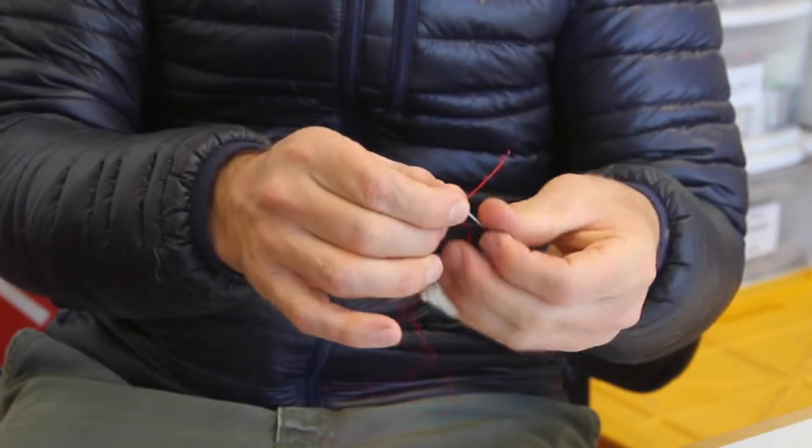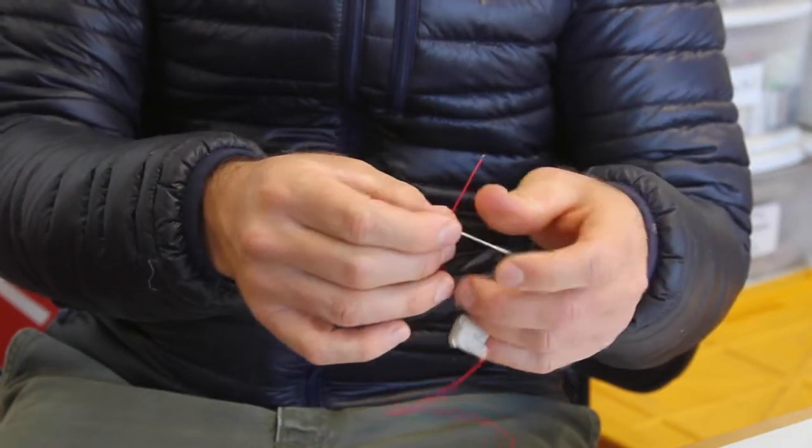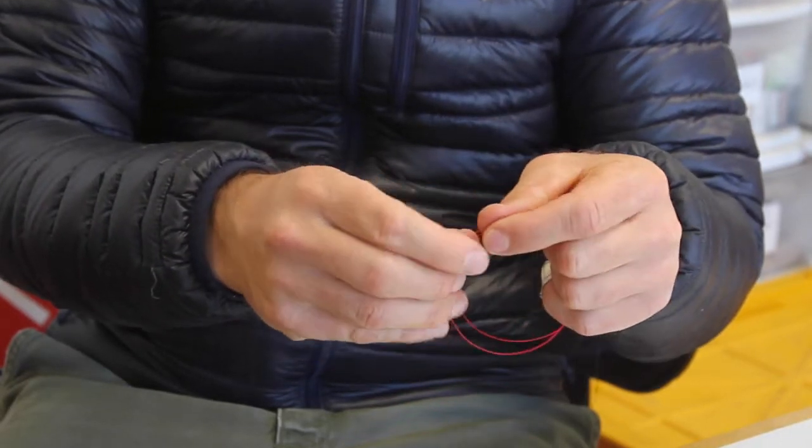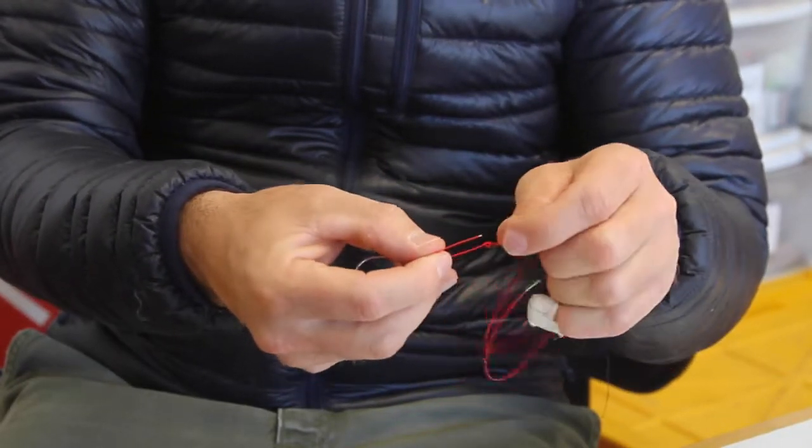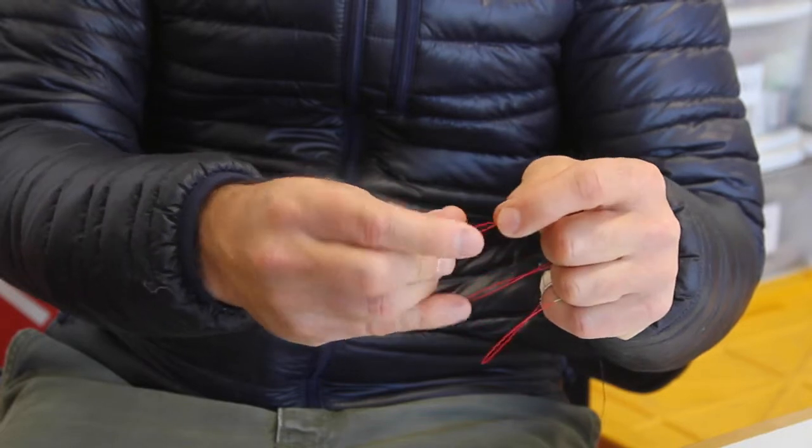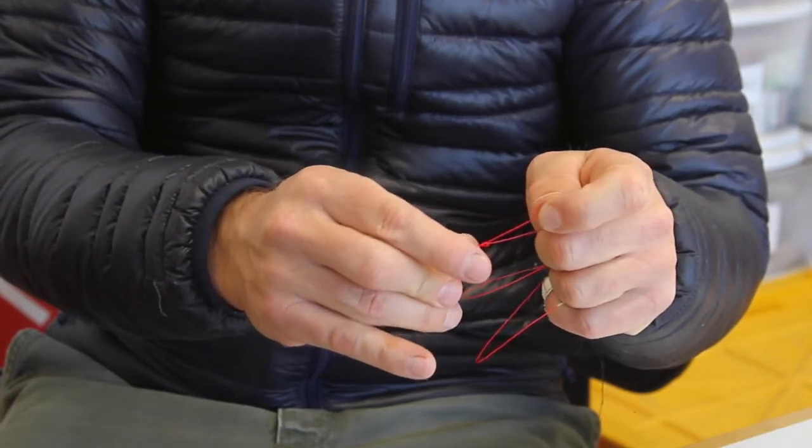Next, we're going to take our tag end and run it through the eye of the hook. After doing so, we're going to come up through our overhand knot.